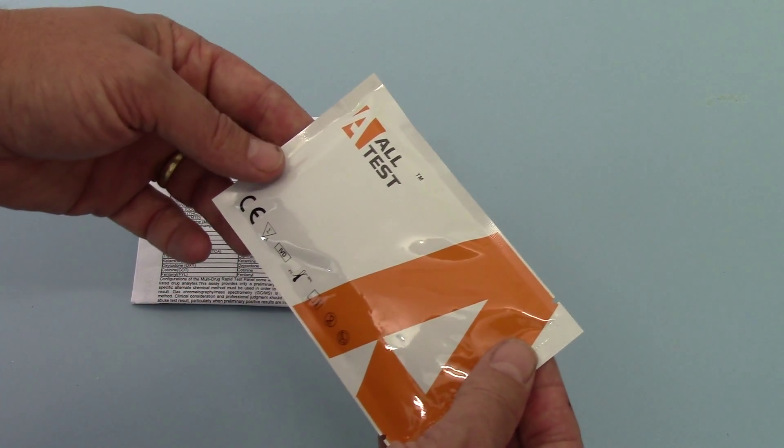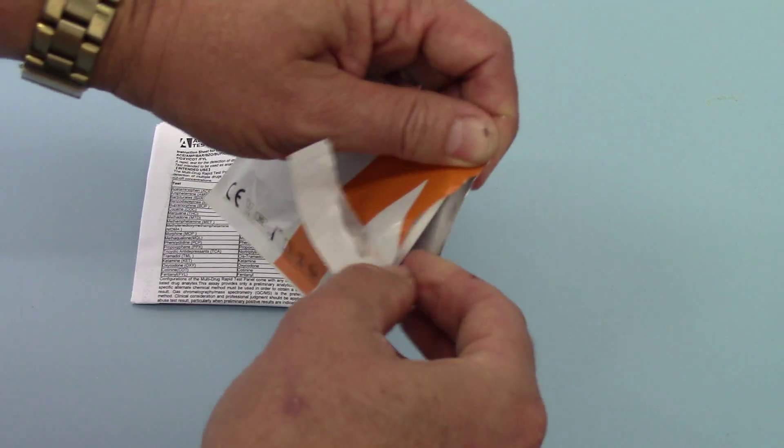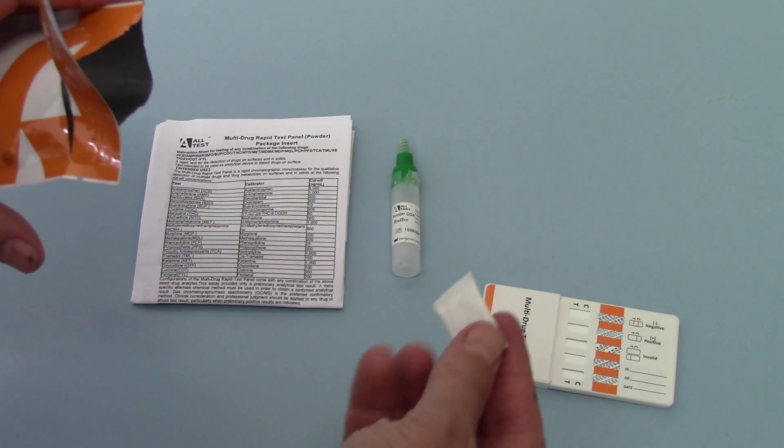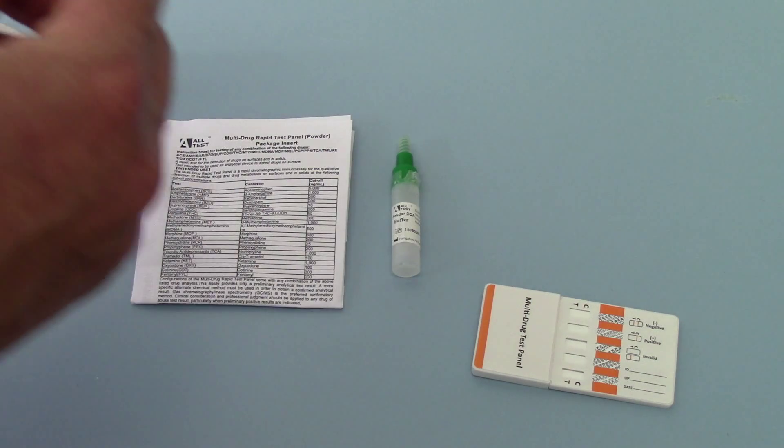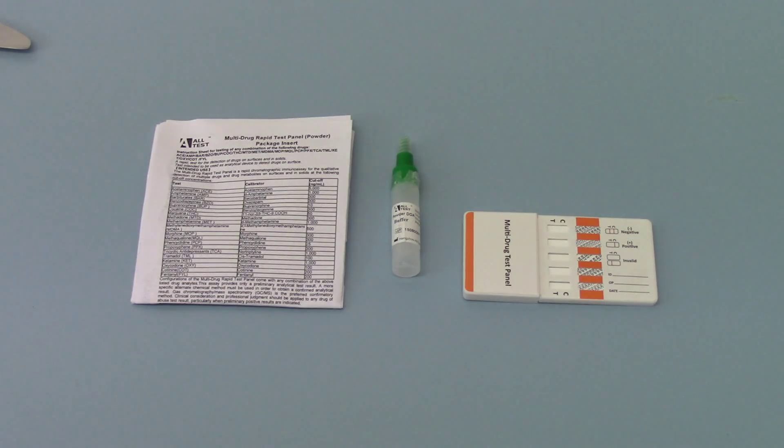So to run the test, when you're ready to do so, the test panel is removed from its pouch. You will get a pack of desiccant, which is just crystals to keep the drug test completely dry in its packaging.